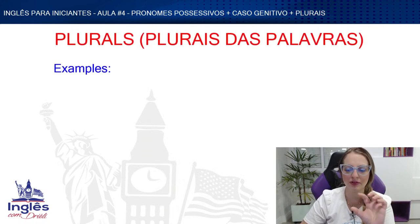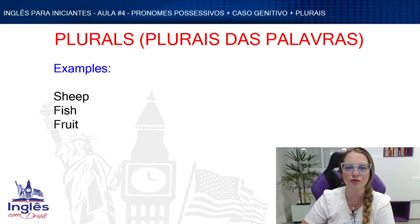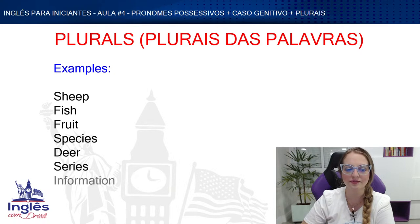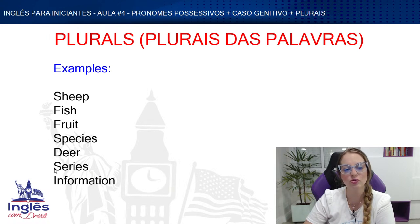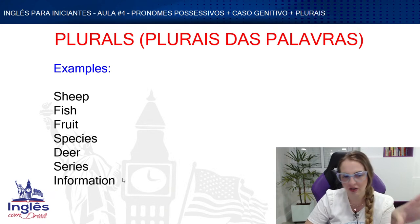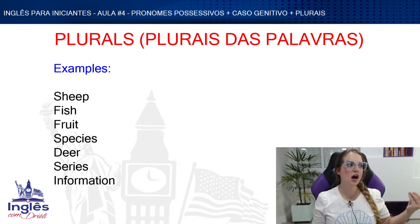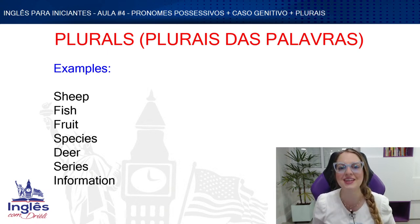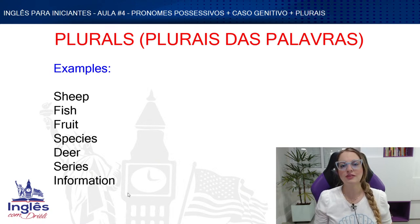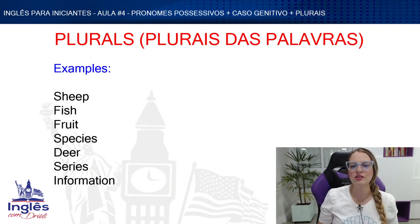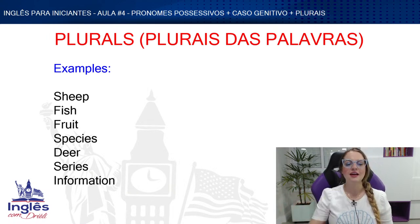Last category: words with no plural form. Repeat: sheep, fish, fruit, species, deer, series, information. These stay the same in singular and plural. 'I love watching series' and 'I loved this series' — always 'series.' 'Information' has no plural — but you can say 'some information' or 'a piece of information' to imply quantity. Note: 'fish' can become 'fishes' when referring to multiple different species, and similarly 'fruits' for different types of fruit.